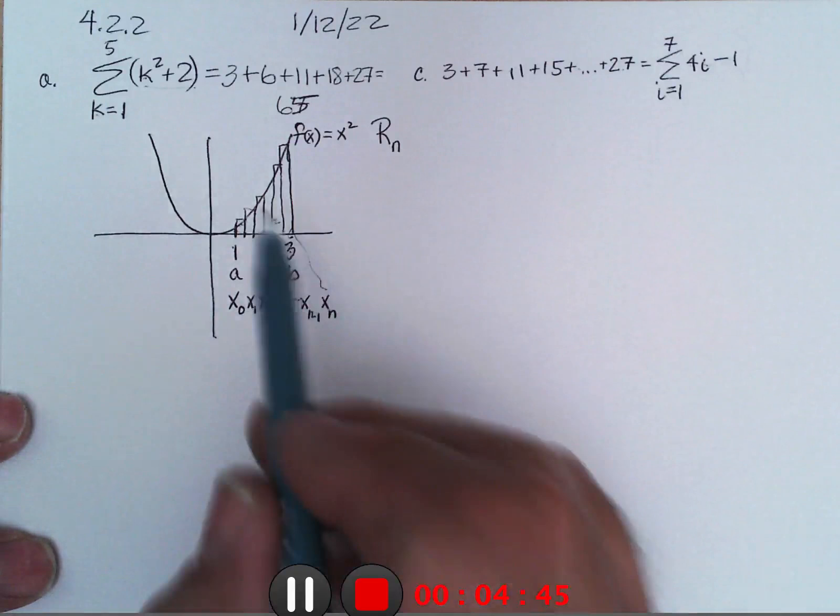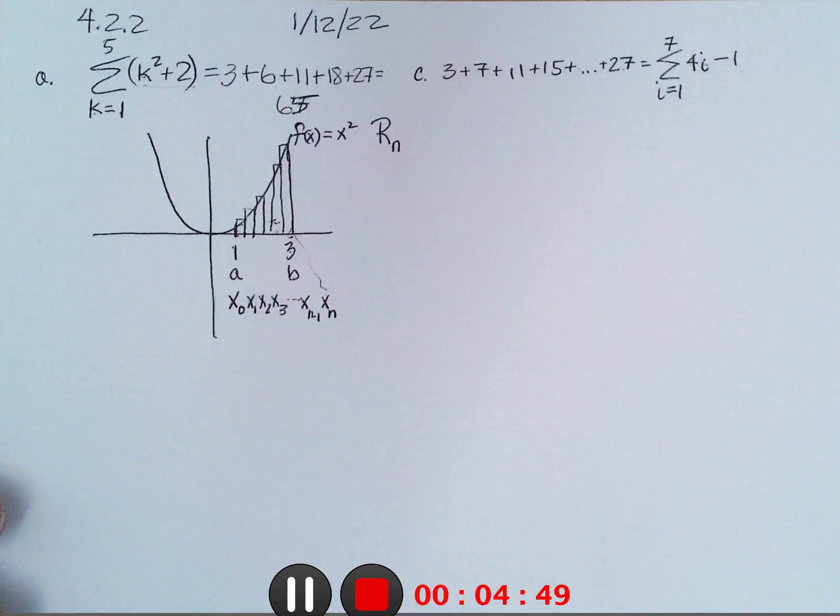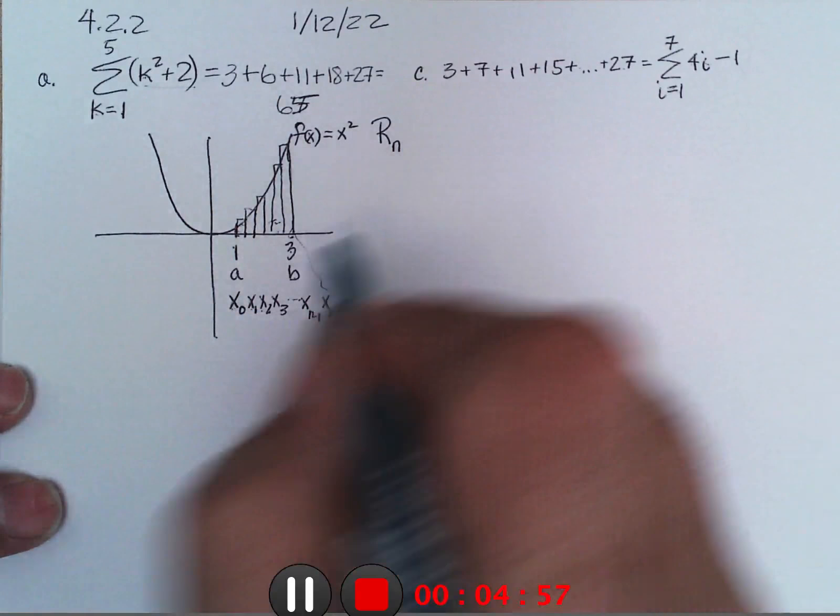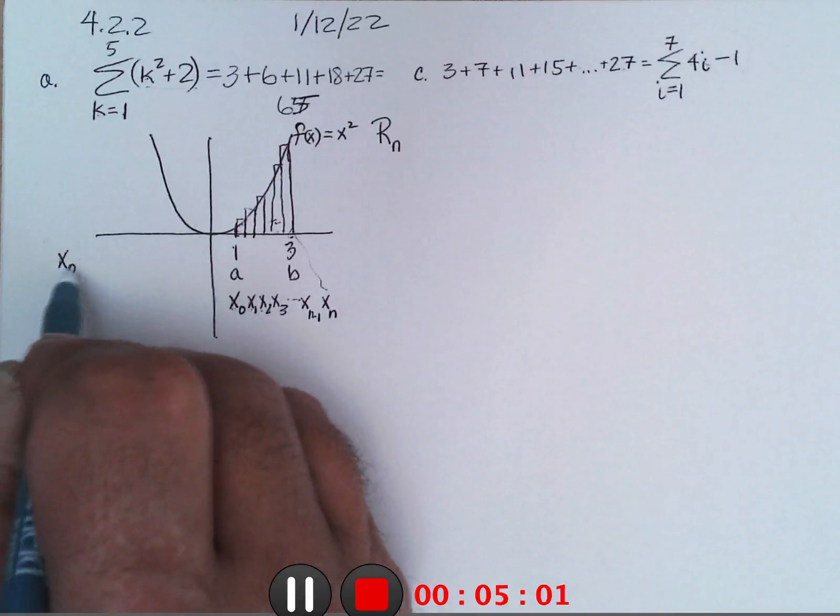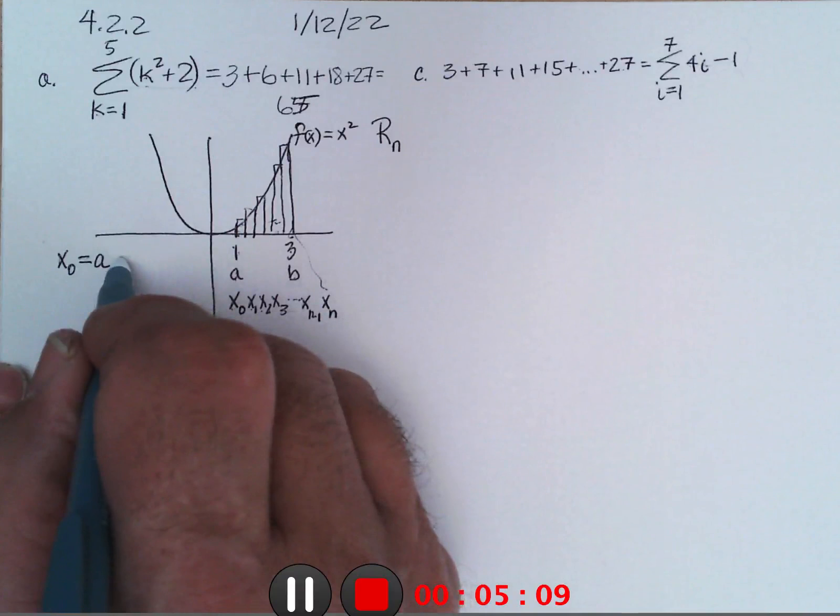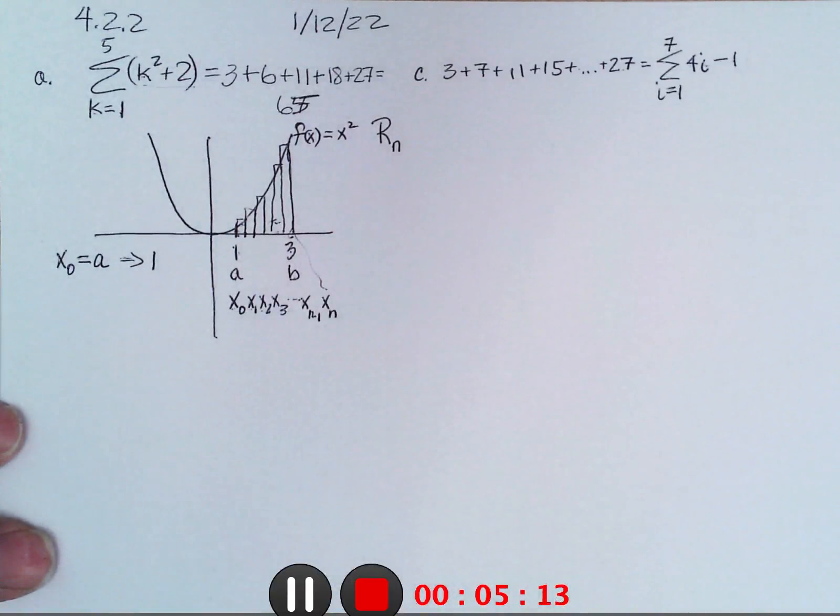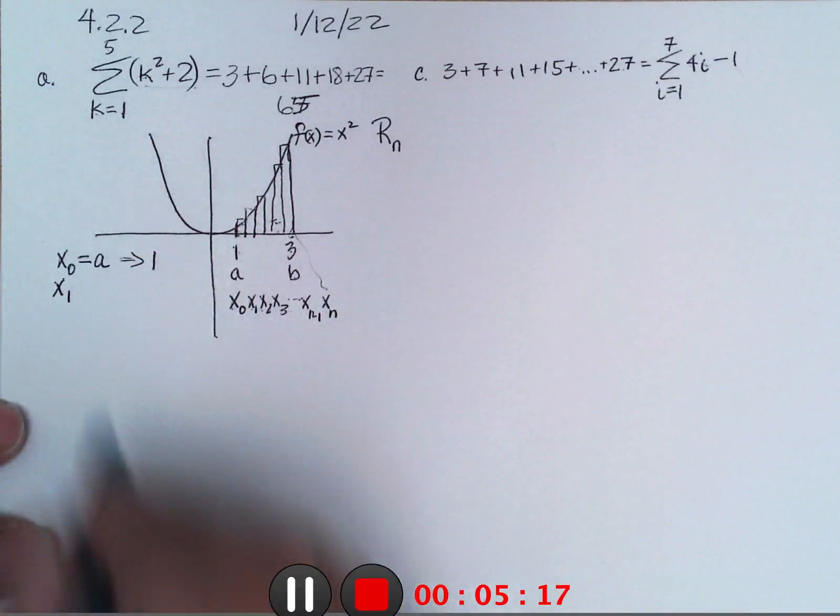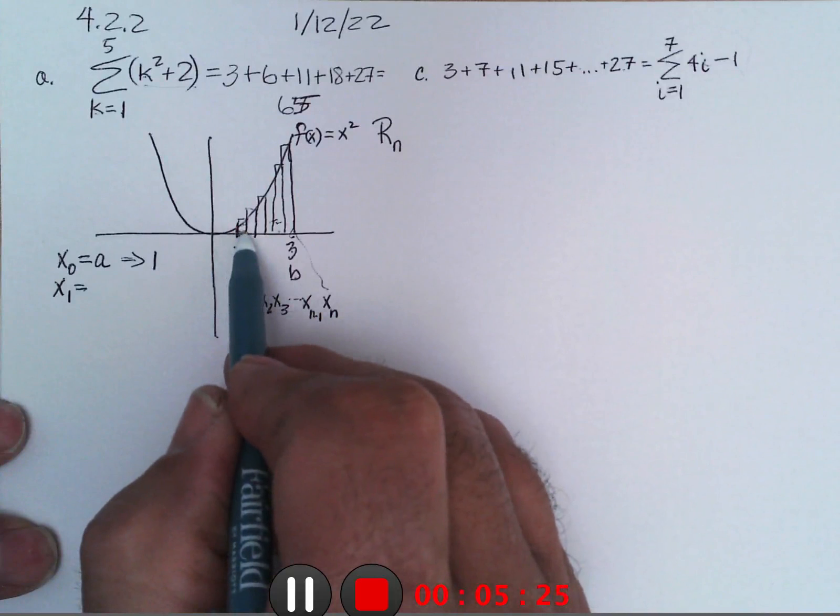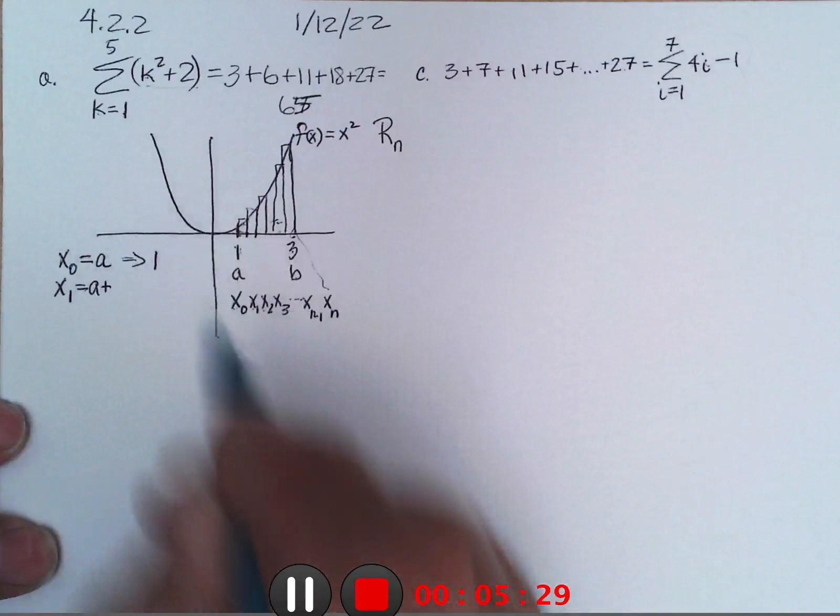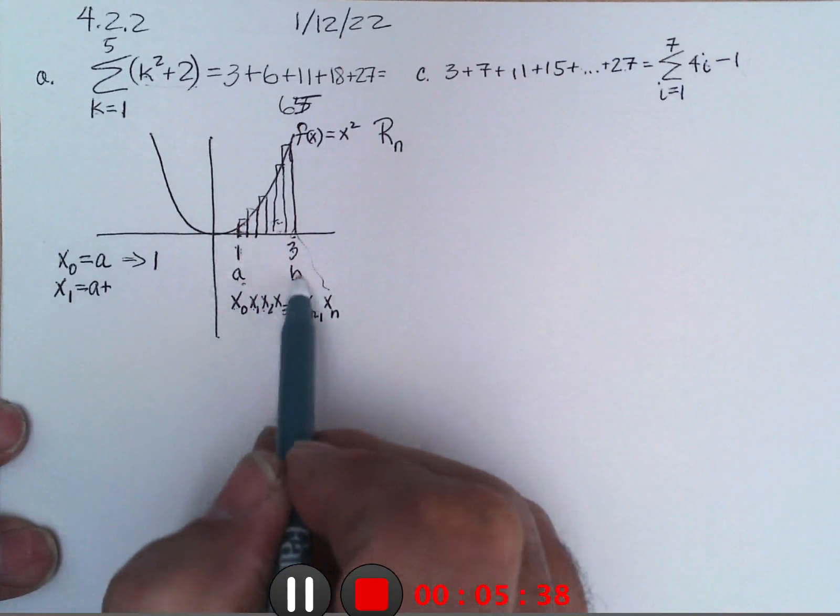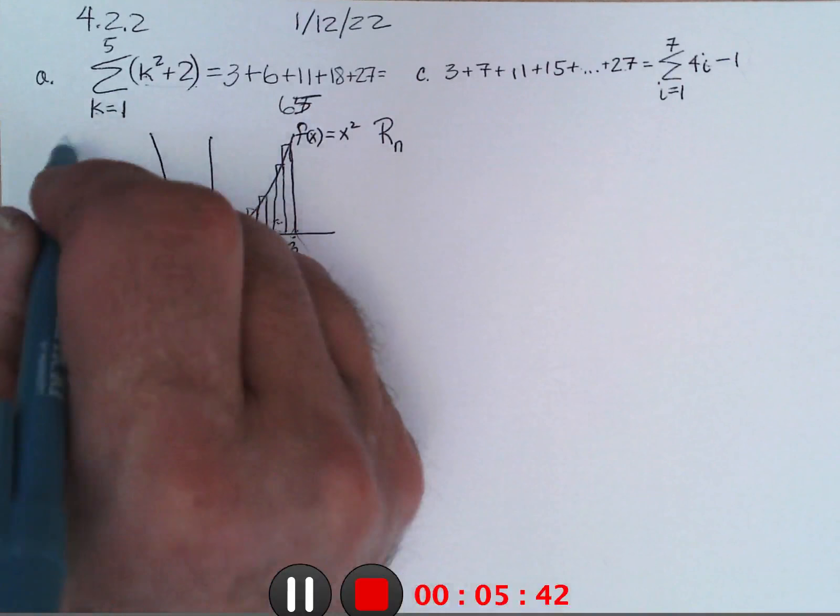So that's the notation here. Now I said in class, what would be another way to describe these x0, x1, x2? Well, x0 is just the start of the interval, which would be a, or in this specific case 1. x1 would be a plus the width of the interval. So how wide is this? If I'm making n divisions from 1 to 3 or from a to b,